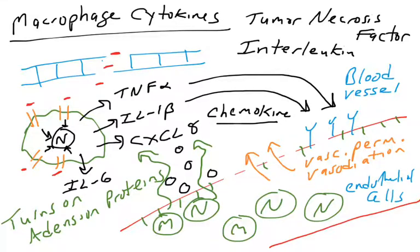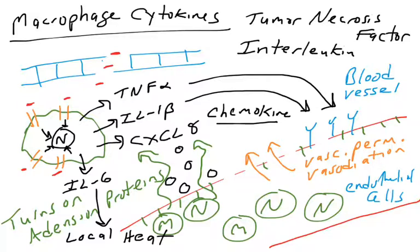The fourth cytokine is IL-6, interleukin-6. When released by macrophages, it acts locally on fat and muscle cells in the tissue to increase their metabolism and generate heat. Heat is beneficial for the immune system — immune cells work better at higher temperatures, and pathogens like viruses and bacteria don't reproduce as well at higher temperatures. So IL-6 works locally to increase the temperature of the inflamed site. These cytokines collectively drive the inflammation characteristics: tumor, rubor, dolor, and calor.